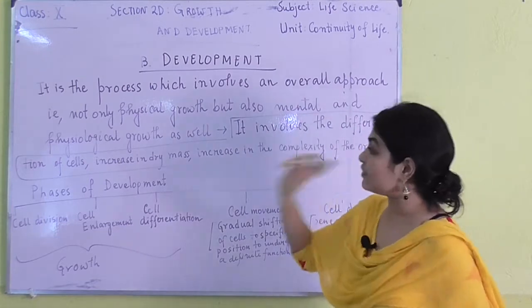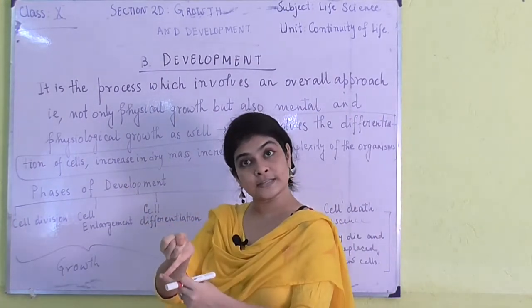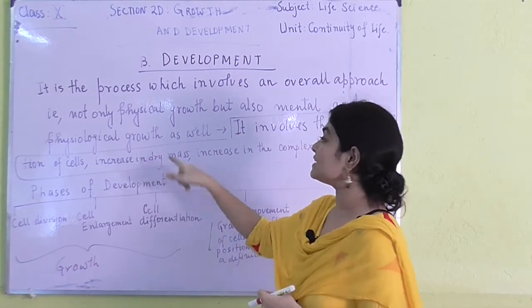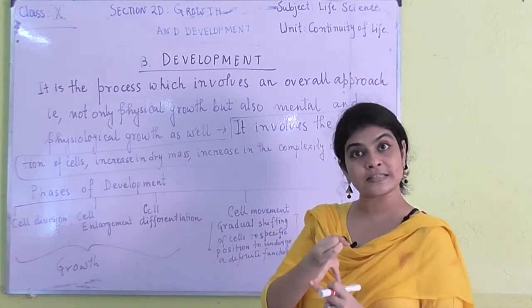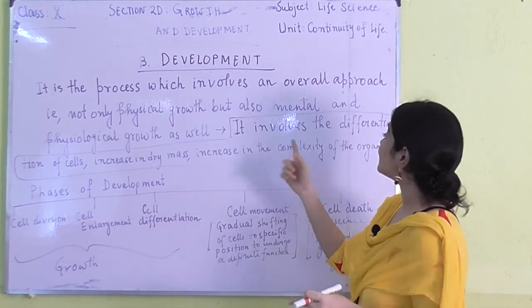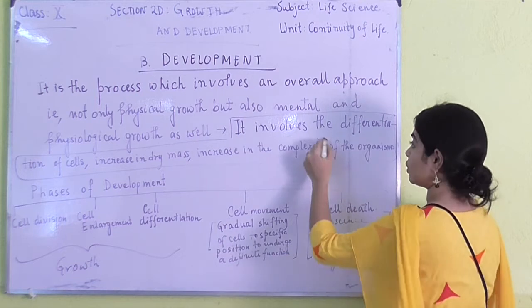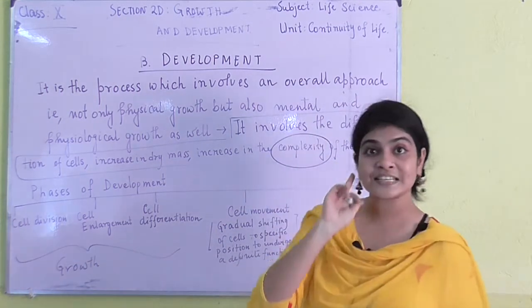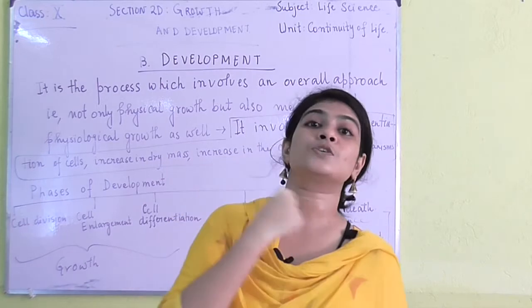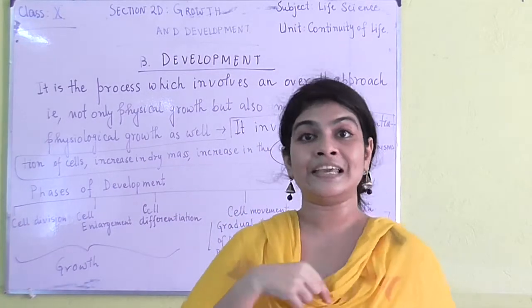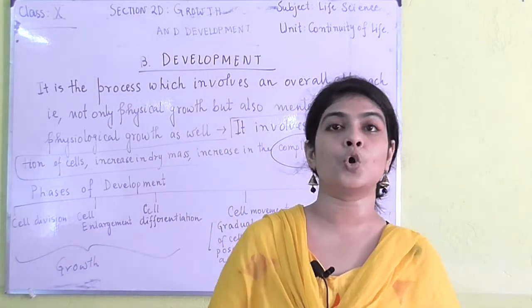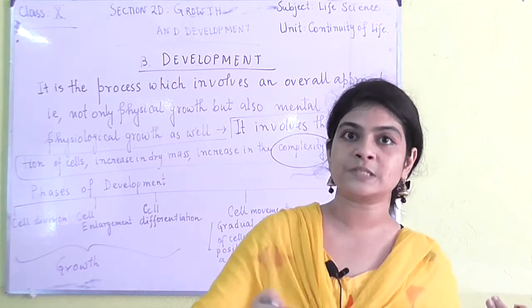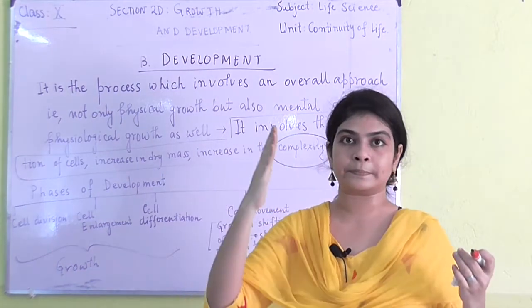Development involves the differentiation of cells, the increase in dry mass, and the increase in the complexity of the organism. It not only deals with physical size, but also with the overall growth of that particular organism that takes place throughout its entire lifespan.